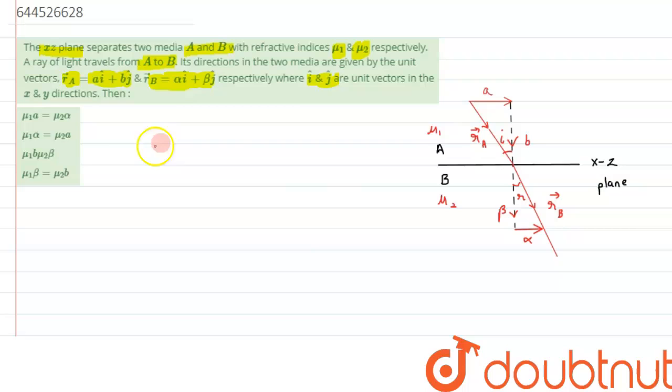So i and j are given as unit vectors, so if we wish to calculate the magnitude of ra bar, it can be written as under root of a square plus b square, and its value comes out to be one because i and j caps are given as unit vectors and we know a unit vector has its magnitude as one.